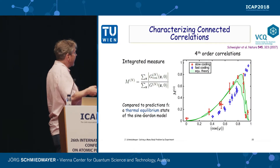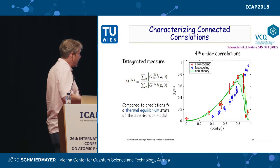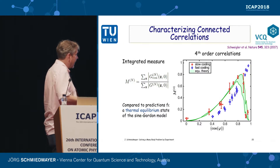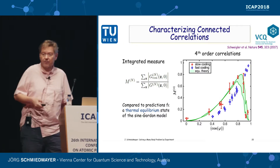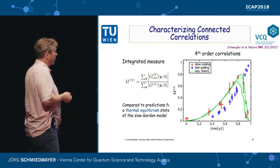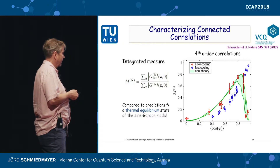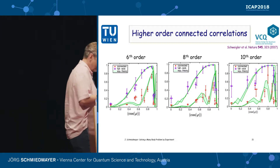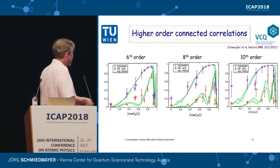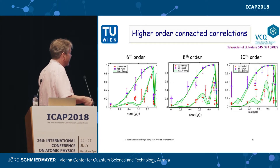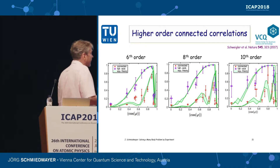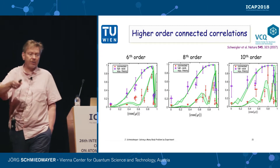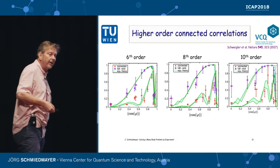By doing many experiments and characterizing everything by the average cosine phi, we find that the fourth-order correlator we measure is exactly what would be predicted from the quantum sine-Gordon model in equilibrium. We can do this with the sixth, eighth, and tenth-order correlators, and we see regions — around average cosine phi of 0.6 to 0.8 — where the tenth-order correlator contains order-one new information compared to everything in the lower-order correlators. This is an extremely strongly correlated quantum system.